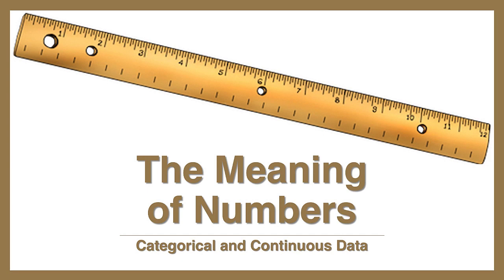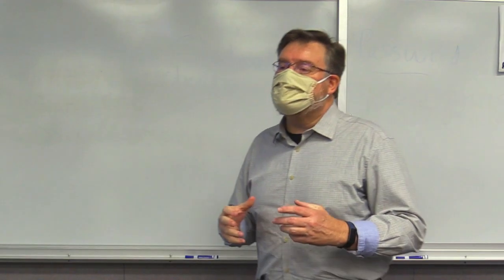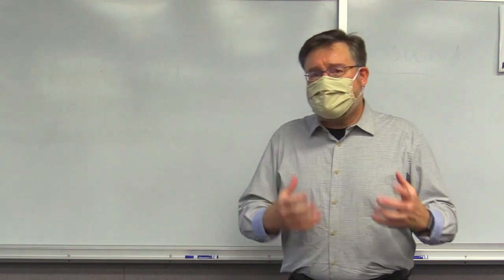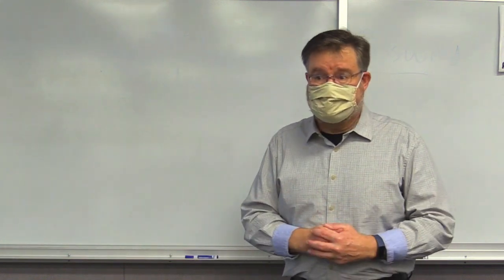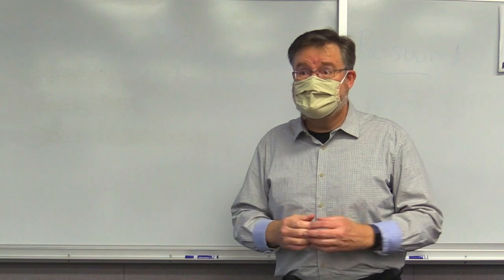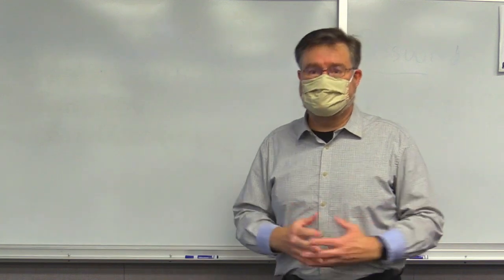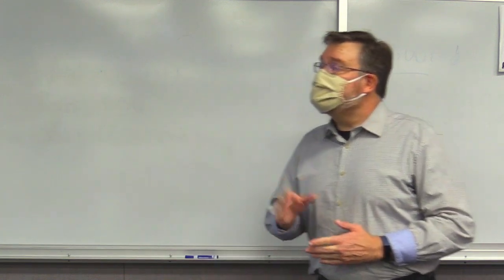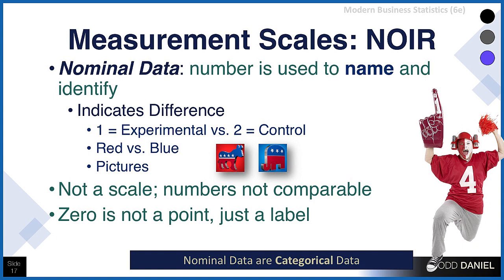Now let's focus on the meaning of numbers, because numbers can do multiple different jobs. We need to know when we see a number one or two — what exactly that number means. Is one and two just different? Or is two twice as much as one? So we're going to start with our four levels of measurement, which I abbreviate as N-O-I-R, or NOIR. That stands for nominal, ordinal, interval, and ratio.